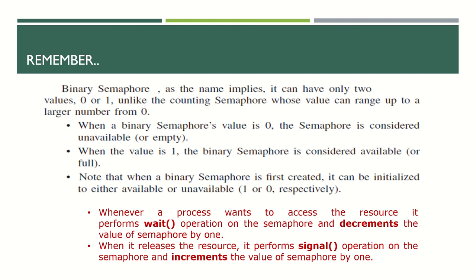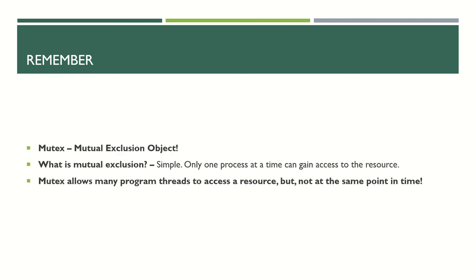For counting semaphore with five printers: the value starts at five. First printer occupied — four; second occupied — three; one is released — back to four. Whenever a process wants to access a resource, it performs a wait operation, which decrements the value by one. When the process releases the resource, it performs a signal operation, incrementing the count by one. Wait acquires the resource; signal releases it.